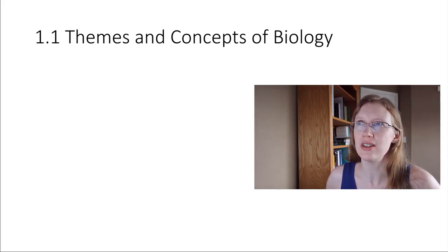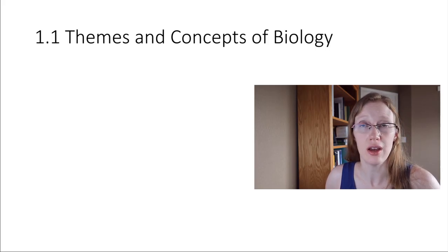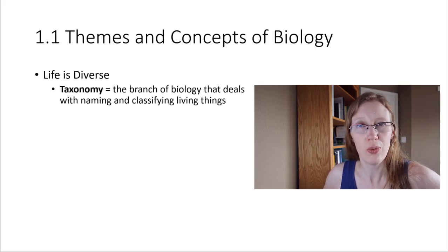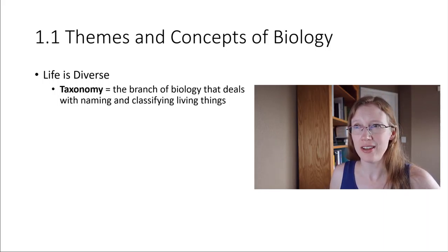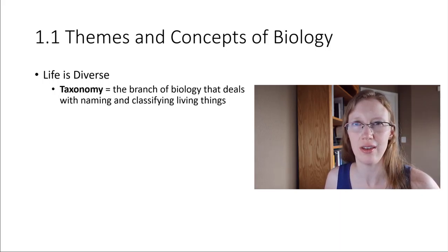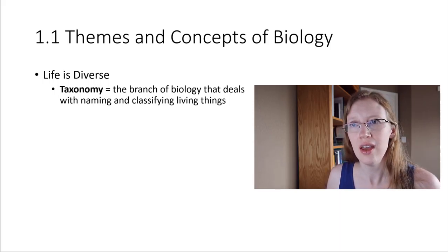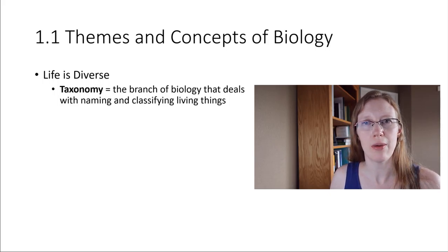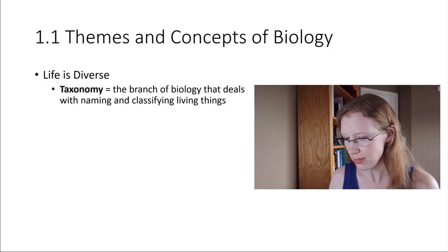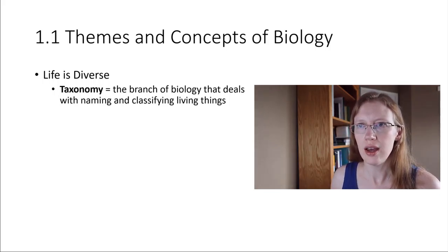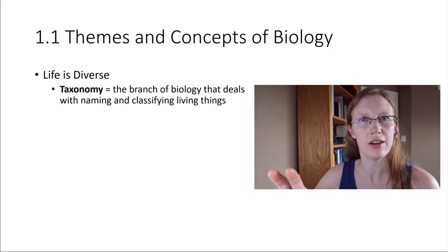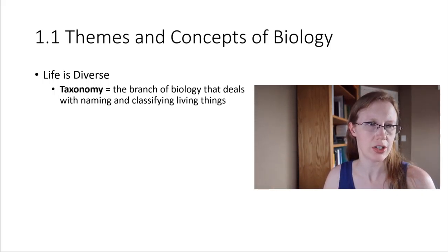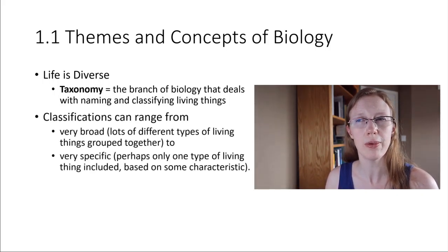Another takeaway - so those were how we recognize living things, those are properties of living things. Another takeaway is that life is extremely diverse, and there are many different branches of biology that deal with this diversity. One branch of biology is taxonomy. Taxonomy is the branch of biology that deals with naming and classifying all these different species, all this different diversity we have in living things. You should know a few examples of different fields in biology. Taxonomy would be one of them.